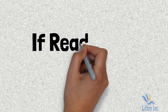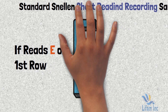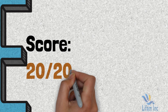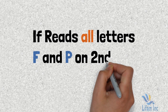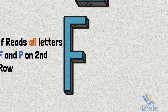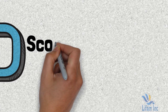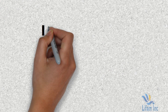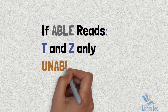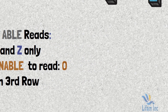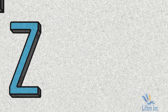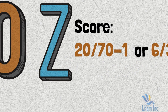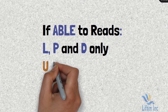If the patient is able to read only the large 'E' on the first row, the score is 20/200. If the patient reads F and P on the second row, the score is 20/100 or 6/30. If the patient reads T and Z on the third row but cannot read one letter, the score is 20/70 minus one or 6/30 minus one.